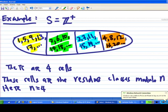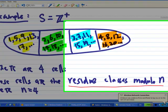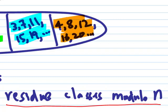Now these cells will have a name. We call it the residue class modular n. In this case, n is equal to 4. So we call this residue class modulo 4.